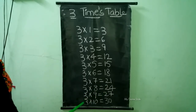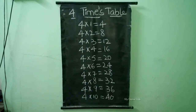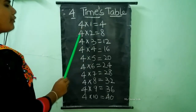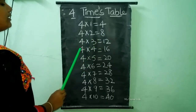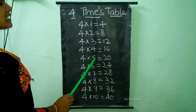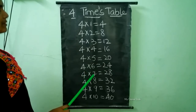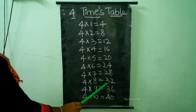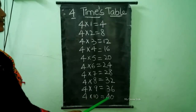3 times 10 is equal to 30. 4 times table. 4 times 1 is equal to 4. 4 times 2 is equal to 8. 4 times 3 is equal to 12. 4 times 4 is equal to 16. 4 times 5 is equal to 20. 4 times 6 is equal to 24. 4 times 7 is equal to 28. 4 times 8 is equal to 32. 4 times 9 is equal to 36. 4 times 10 is equal to 40.